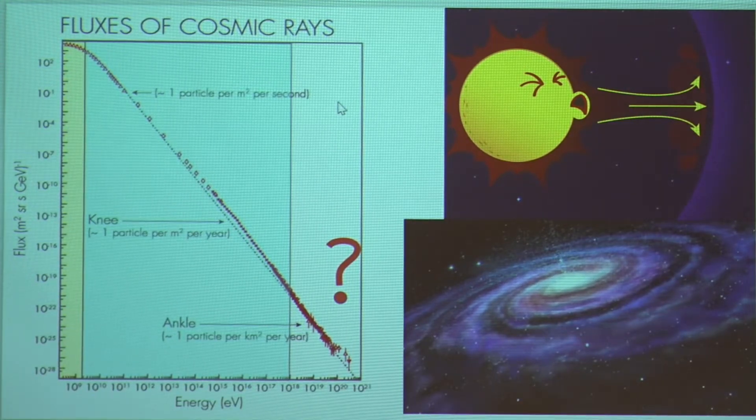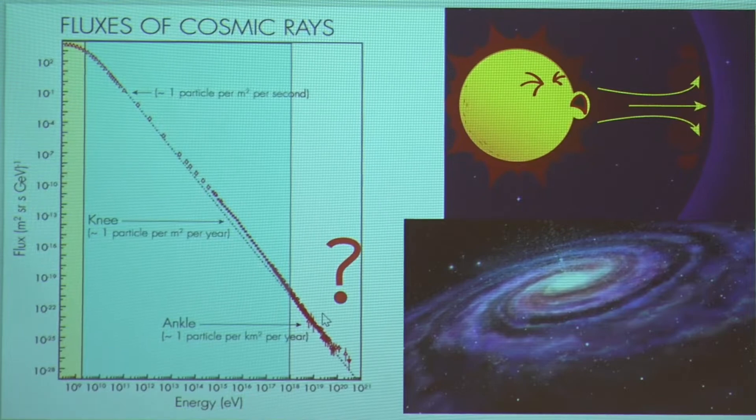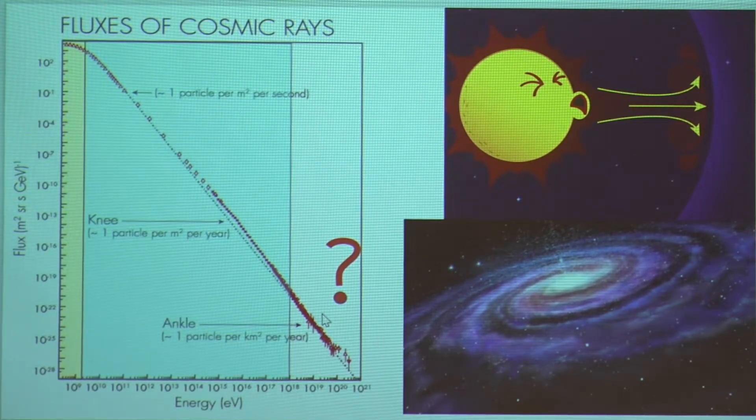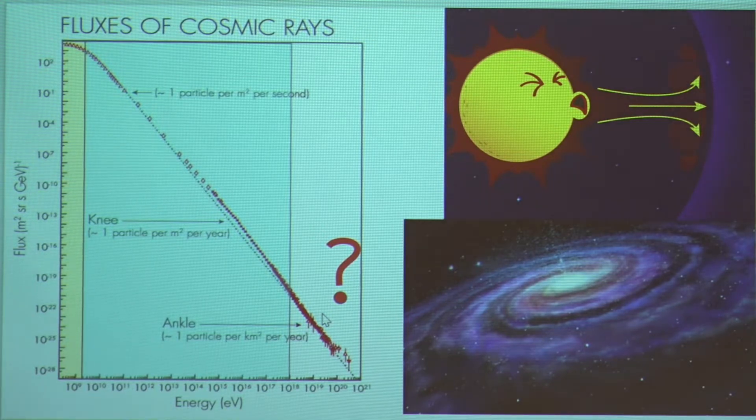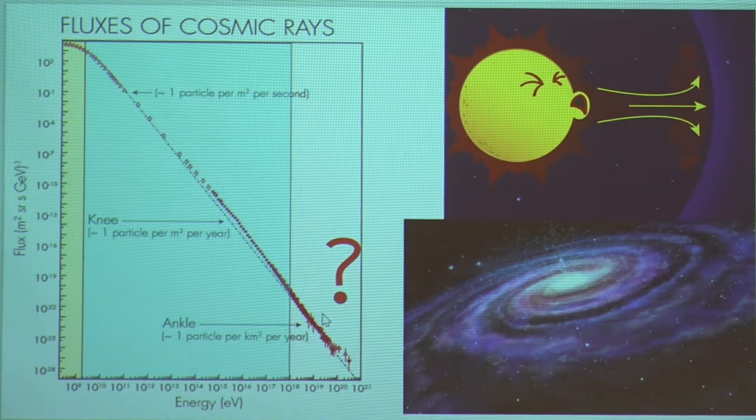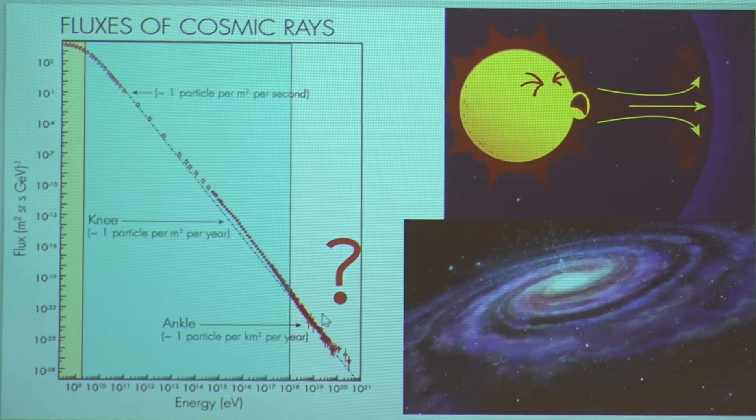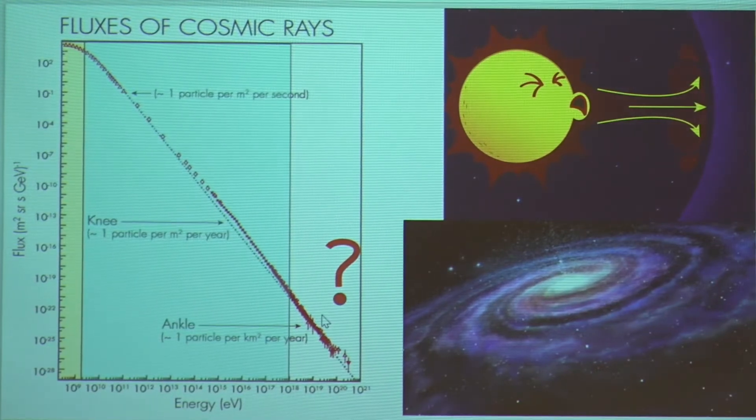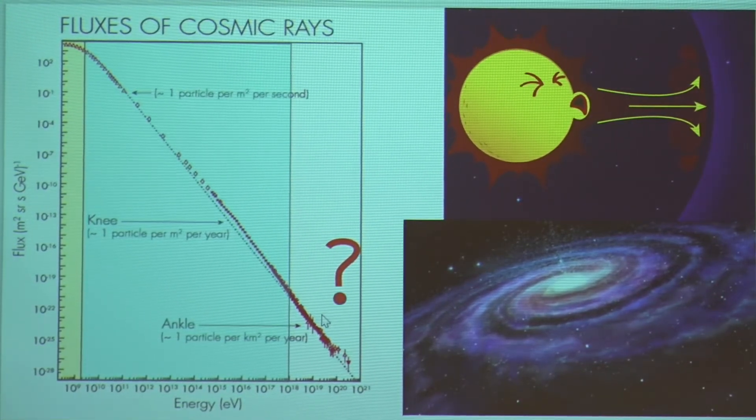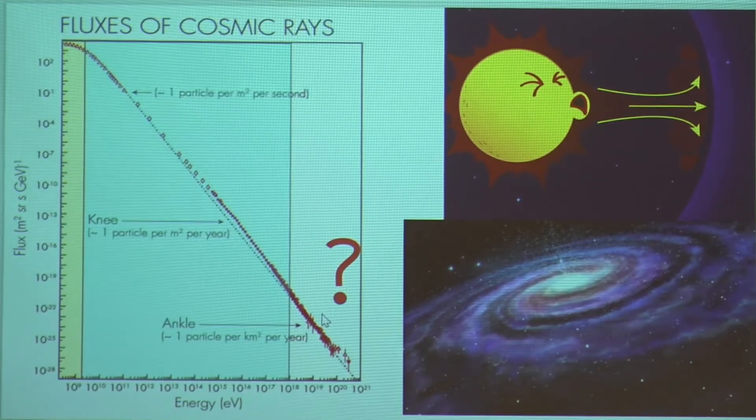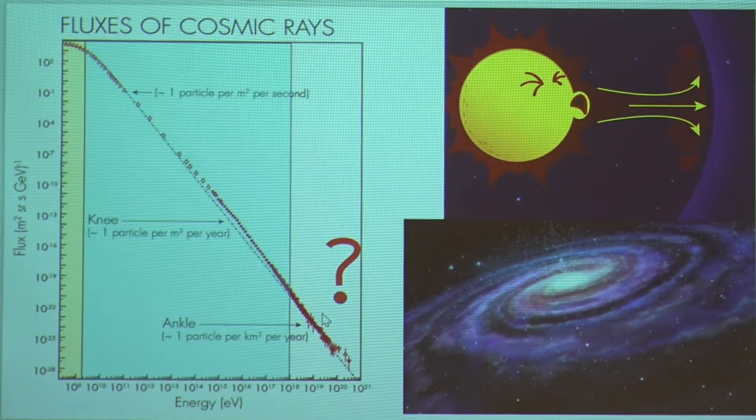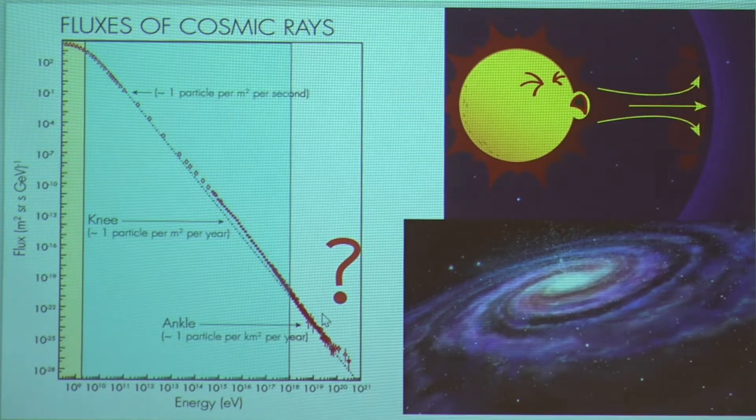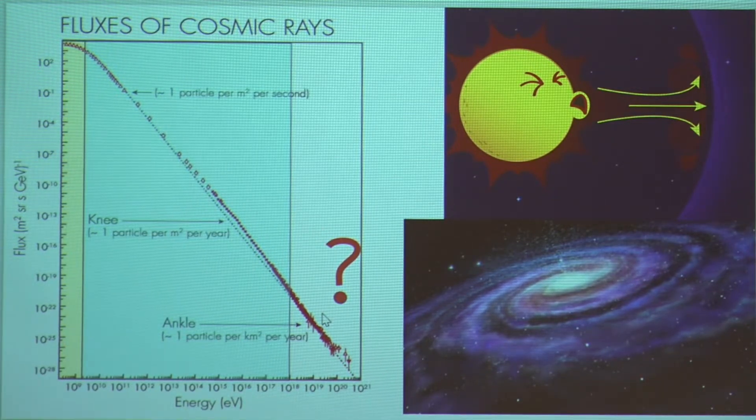And somewhere around here, maybe the ankle or before the ankle, we expect a transition from galactic cosmic rays that are produced in our own galaxy to extragalactic cosmic rays that are coming to us from outside our galaxy. And it is simply because as we increase the energy of these particles, it becomes harder to confine them in a small space. And small space being our galaxy here.